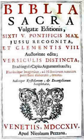The Clementine Vulgate remained the official Latin Bible text of the Roman Catholic Church until the end of the 20th century, when the Nova Vulgata was issued. In 2001, the Congregation for Divine Worship and the Discipline of the Sacraments, in Liturgiam Authenticam, announced that the Nova Vulgata is the official Bible of the Roman Catholic Church.